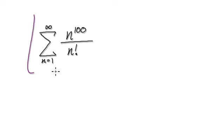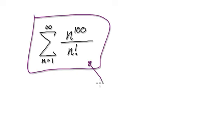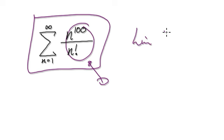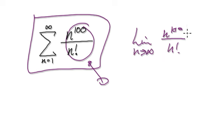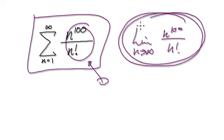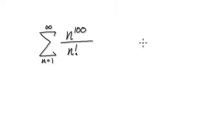So to do this, in order for a series to converge, the limit of this must head towards zero. So our normal routine would be to check that the limit of this equals zero. But looking at this, we can't easily tell at first glance, so let's just ignore this step because we can't really tell at first glance.